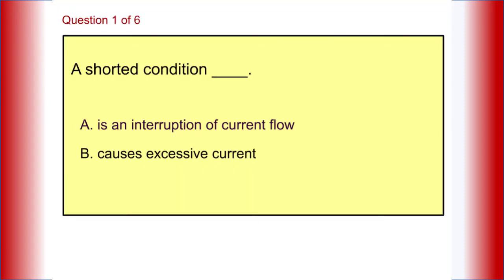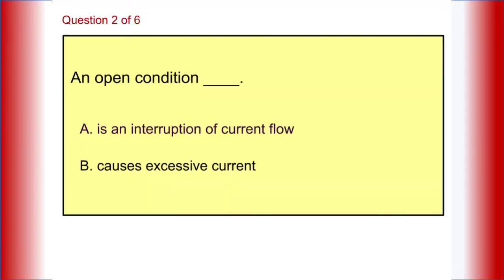Let's try a few questions. A shorted condition: A, is an interruption of current flow, or B, causes excessive current. The answer is B, causes excessive current. An open condition: A, is an interruption of current flow, or B, causes excessive current. The answer is A, an interruption of current flow.